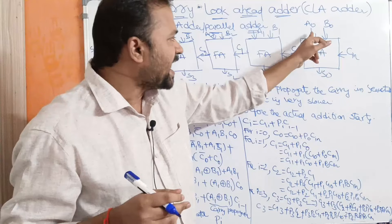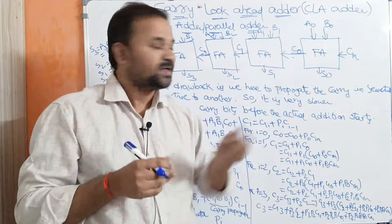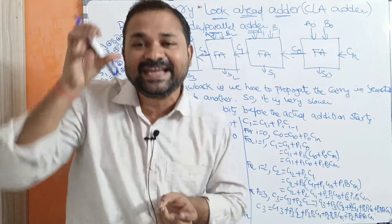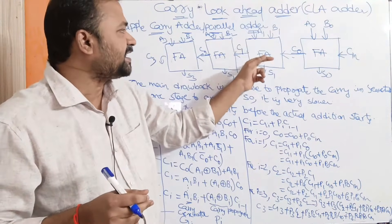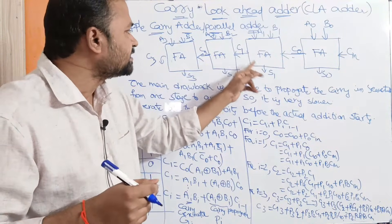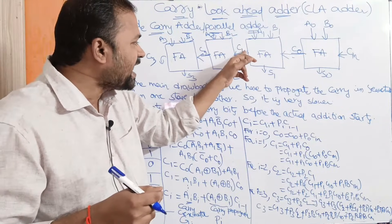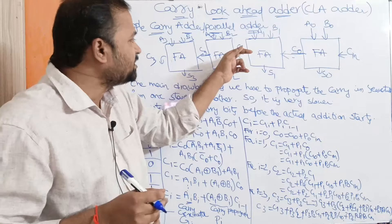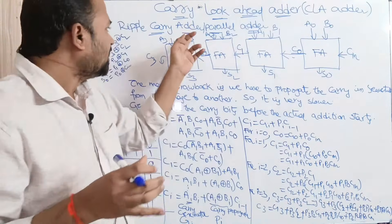If you take the first full adder, it accepts A0, B0, and CIN as inputs and produces C0 and S0 as outputs. We have to propagate C0 as the input carry to the next full adder, but there is a delay in propagating this carry. The second full adder accepts A1, B1, and C0 as inputs and produces C1 and S1 as outputs. This full adder then has to propagate C1 as input carry to the next stage, but again there is a delay.